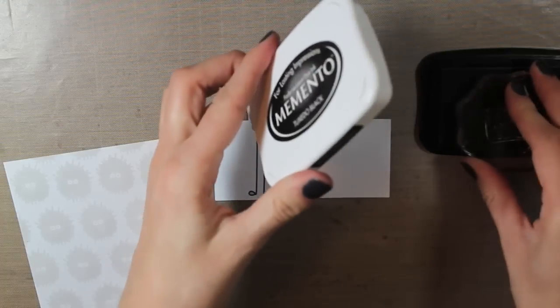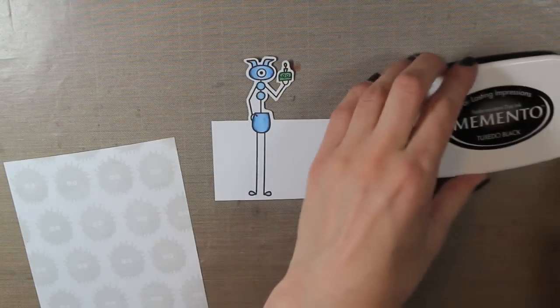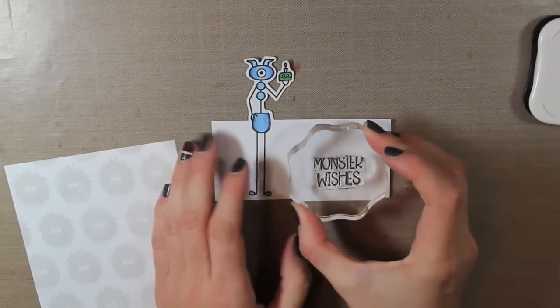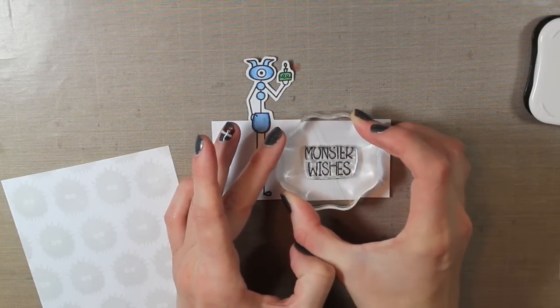So I'm going to stamp my sentiment. I chose the one that said monster wishes. I'm going to stamp that right in the center of that big white space.